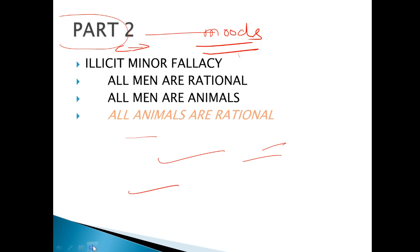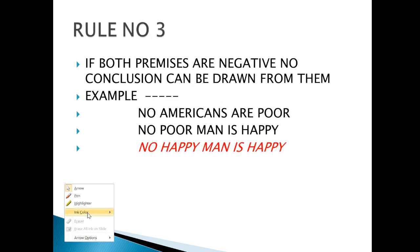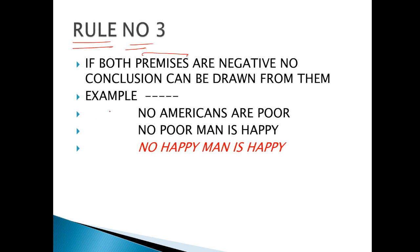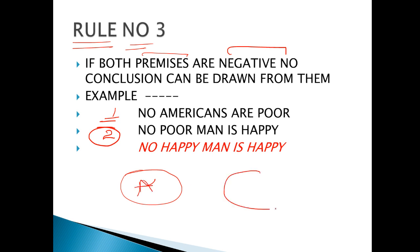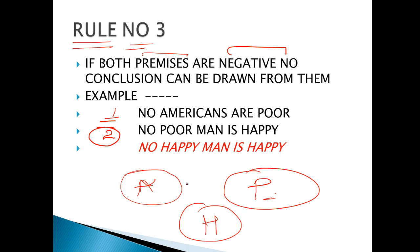We will talk about distribution. Rule number 3 says that if both premises — statement number 1 and statement number 2 — are negative, then no conclusion can be drawn. For example: 'No American is poor.' 'No poor is happy.' Here, no conclusion can be drawn — no happy man is American.